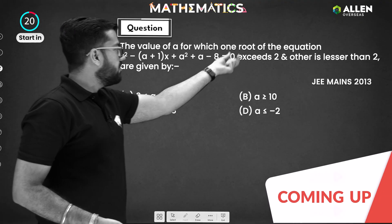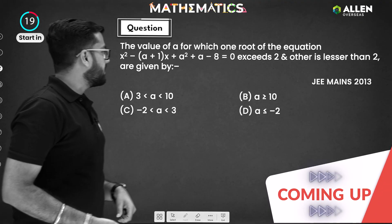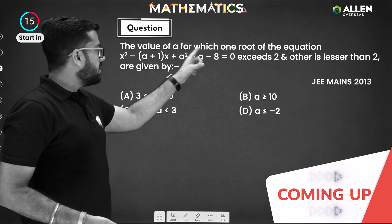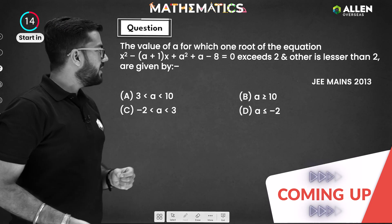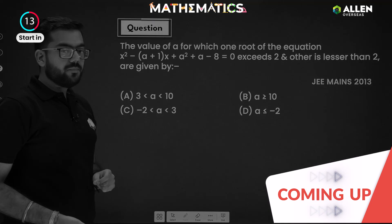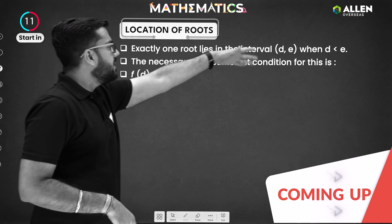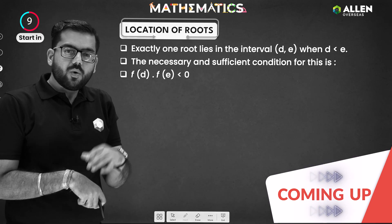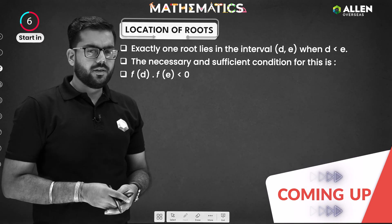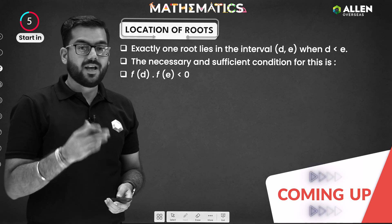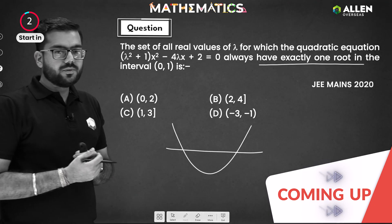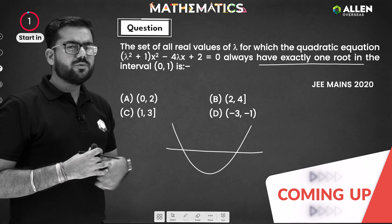The value of 'a' for which one root of the equation x² − (a+1)x + (a² + a − 8) = 0 has exactly one root lying in the interval (d, a). We need to visualize the situation; initially we don't have an idea about lambda, so we assume a tentative graph.